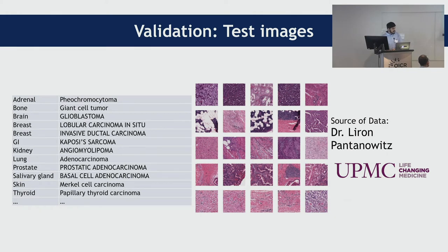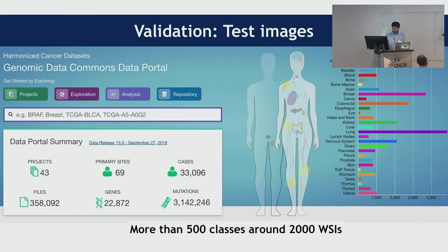To validate this study — which is one of its kind — we had to come up with a validation scheme. We used two datasets. One is a private dataset from UPMC that my company Huron Digital had available, consisting of 300 WSIs from different primary sites and diseases. The second testing dataset is the publicly available TCGA dataset, which many recent studies have used. We selected around 2,000 WSIs randomly from TCGA, giving us a nice distribution of diseases and primary sites.